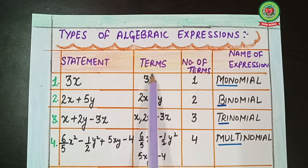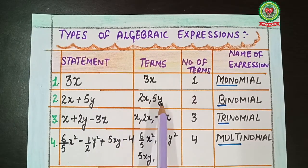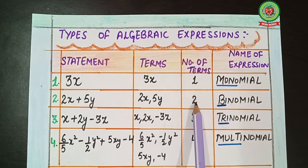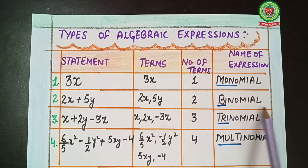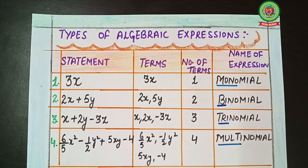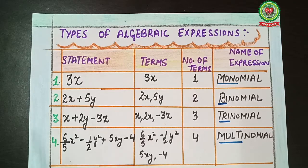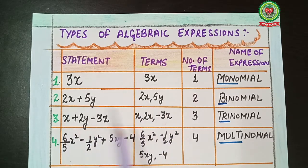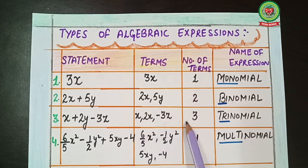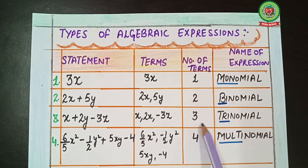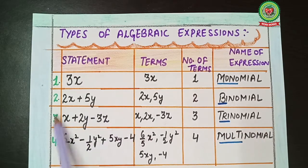Second, taking 2x + 5y — this algebraic expression is connected by addition. The two terms are 2x and 5y. For two terms, the specific name is binomial — 'bi' means two. Third, taking x + 2y − 3z — the terms are x, 2y, and −3z. There are three terms, so the name is trinomial — 'tri' means three.